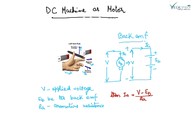Under no-load conditions, the armature takes up speed, and back EMF starts increasing. As the speed increases, the motor speed becomes constant. Under such conditions, the speed of the motor becomes constant and the motor takes no current.